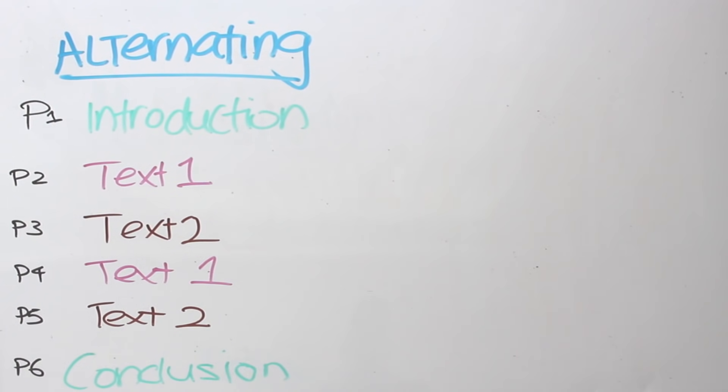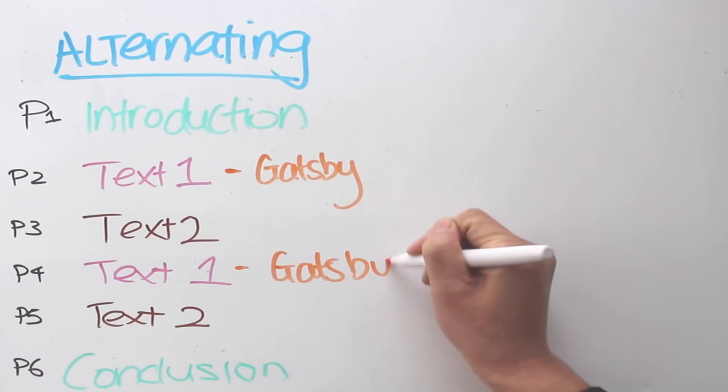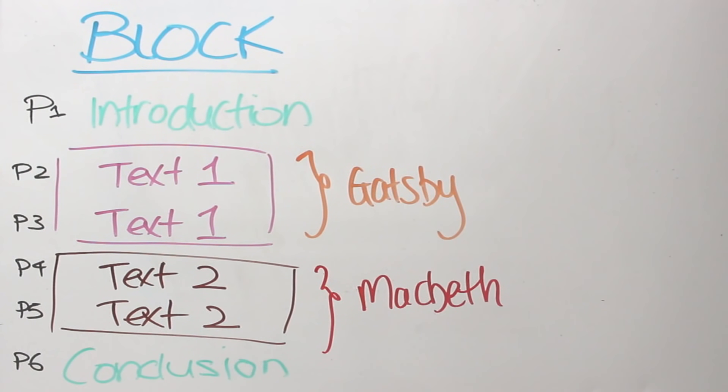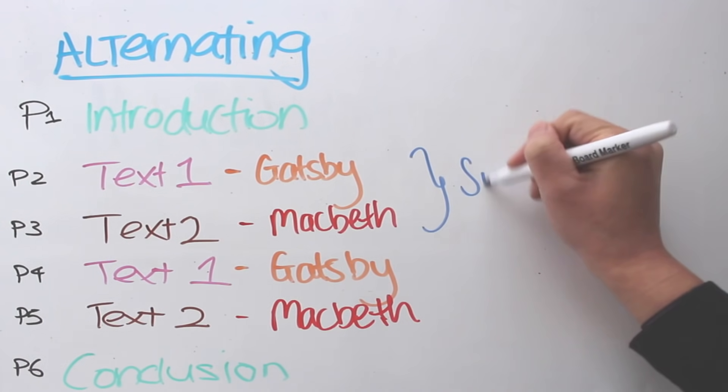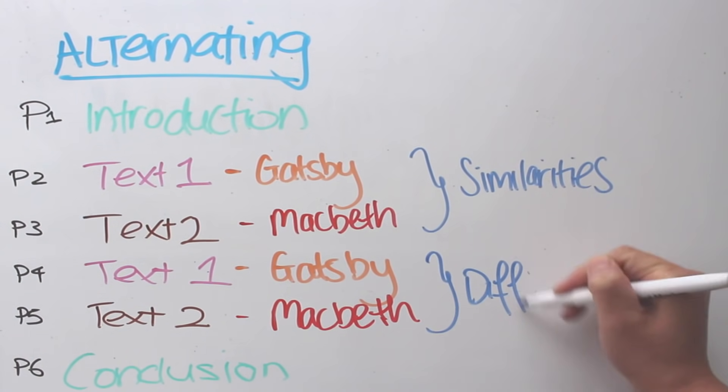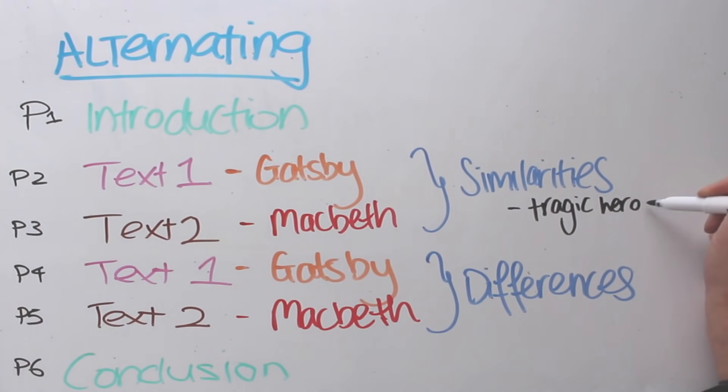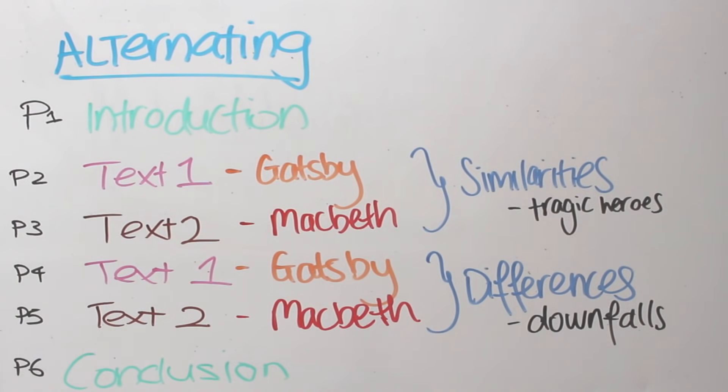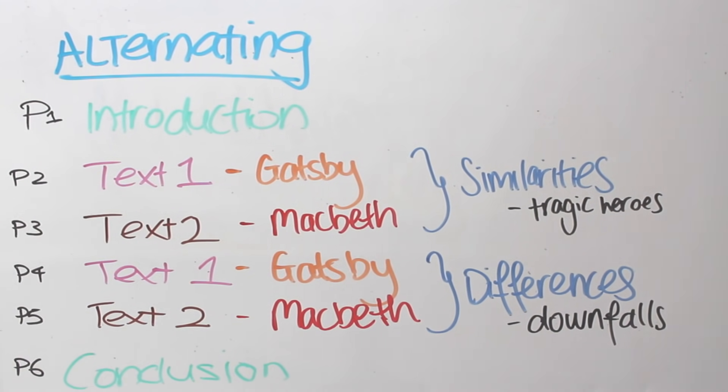Now text one is Great Gatsby and text two is Macbeth. So what you'll do is instead of spending the first half of your essay on one text and the second part of your essay on another text, you'll be spending the first part of your essay looking at similarities and the second part looking at differences. So when you look at similarities, you can point out how they're both tragic heroes, but with their differences, you can talk about how their downfalls were attributed to different reasons. And this my friends is an alternating structure.